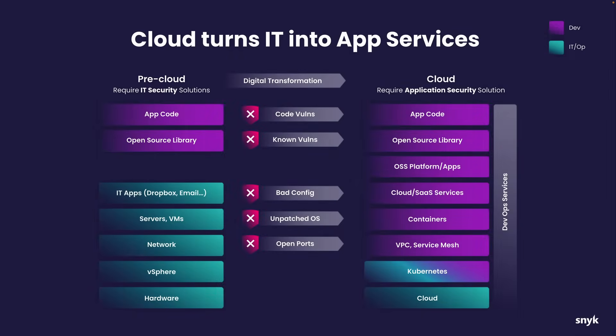When we look at the modern application, it's not just the code that the developers write anymore, and it's not even the dependencies that they might bring in from the open source world. The modern application is made up of all different types of code. The cloud itself is just software, and it's all controlled by infrastructure as code. So throughout the application stack, things that used to be controlled by a central IT team are now controlled by code and by software.